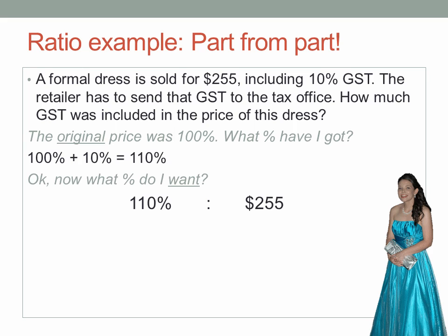That's the original 100% plus 10% GST, making 110%. $255 is 110%. Now, what percent do I want? I want the amount of the GST, which is 10%.